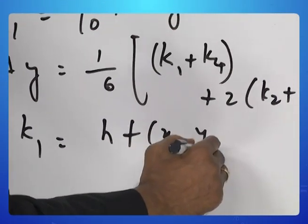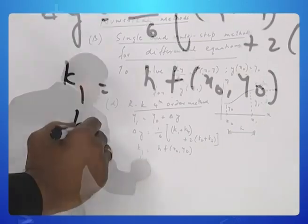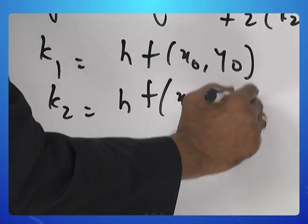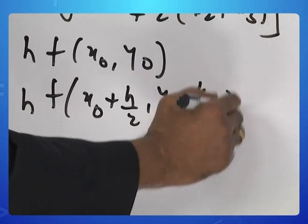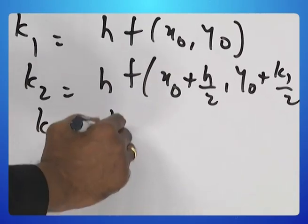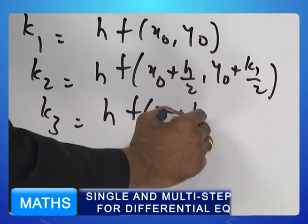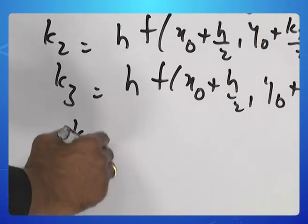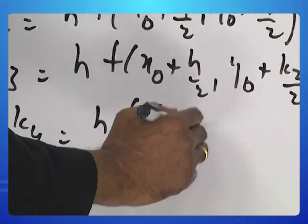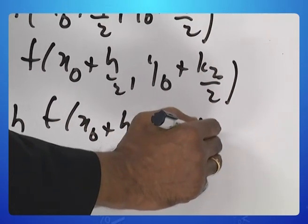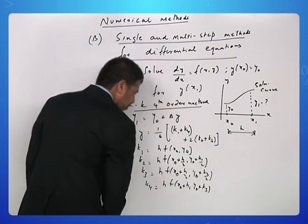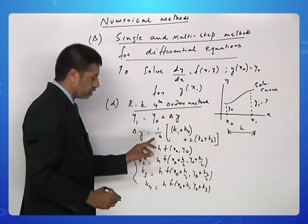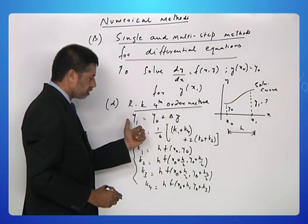k1 is the same as the k1 of the second order method. k2 is h f of x naught plus h by 2 y naught plus k1 by 2. k3 and k4 is h f of x naught plus h y naught plus k3. Once you estimate k1, k2, k3, k4, you find out delta y and then use this delta y to find the value of y1.